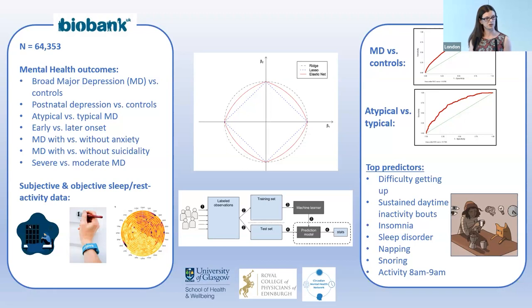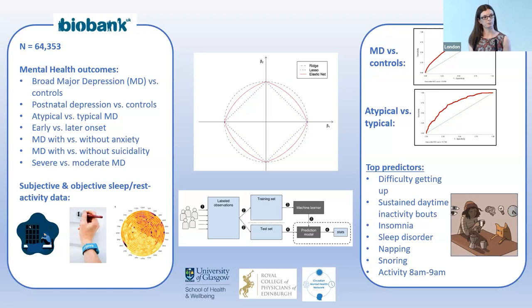For each outcome, we conducted ridge, lasso, and elastic net models, then selected the best one in terms of area under the curve in the test dataset. The overall discrimination performance wasn't great — for depression versus controls, AUC was 0.68. The best performance was for atypical versus typical depression, where AUC was 0.74. Importantly, these sleep and circadian measures were taken at a time when most of the sample weren't currently suffering a depressive episode. So even when looking at someone's overall sleep and circadian function when they were otherwise healthy, we can to some extent discriminate those with depression and those showing worse symptom profiles.